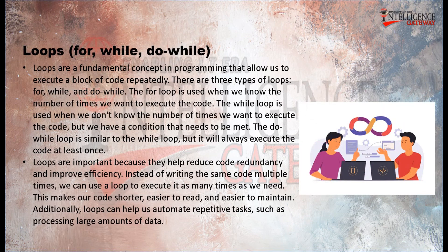Loops — for, while, do-while: loops are a fundamental concept in programming that allow us to execute a block of code repeatedly. There are three types of loops: for, while, and do-while. The for loop is used when we know the number of times we want to execute the code. The while loop is used when we don't know the number of times but have a condition that needs to be met. The do-while loop is similar to the while loop but will always execute the code at least once. Loops are important because they help reduce code redundancy and improve efficiency — instead of writing the same code multiple times, we can use a loop to execute it as many times as needed, making our code shorter, easier to read, and easier to maintain.